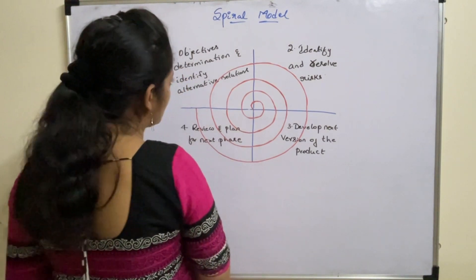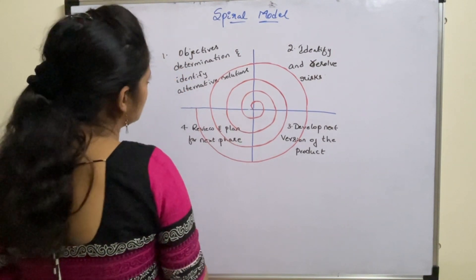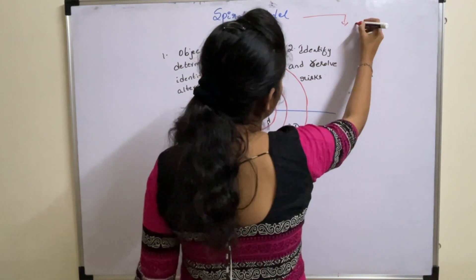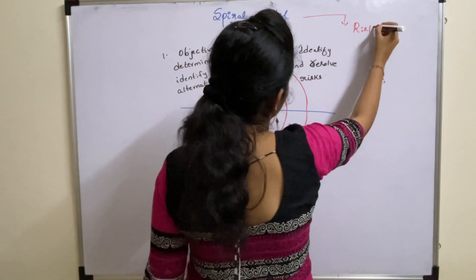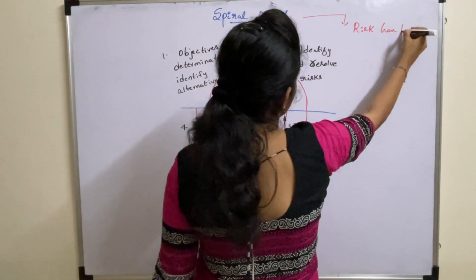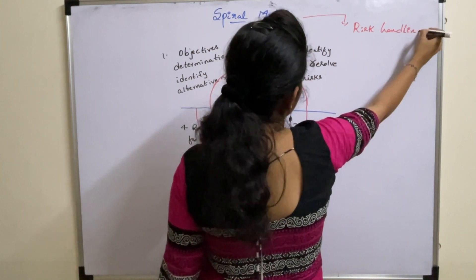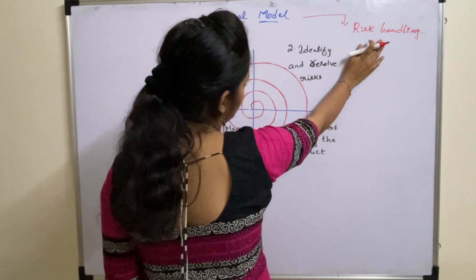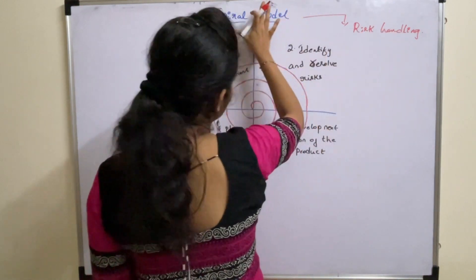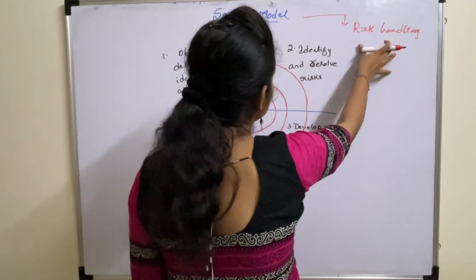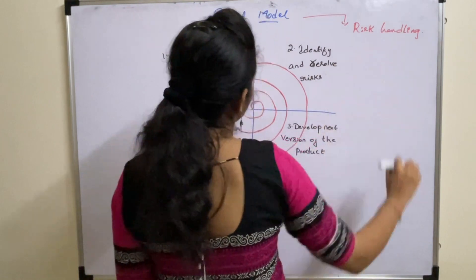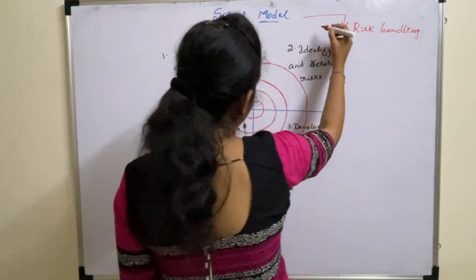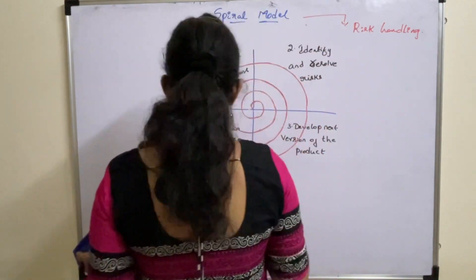In this lecture we will discuss the spiral model. The spiral model is mainly suitable for risk handling. If the project is complex, there will be more risks associated with it. This model is suitable for complex projects and useful for risk handling. When to use this model?